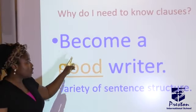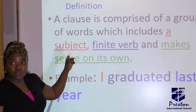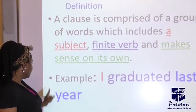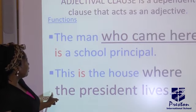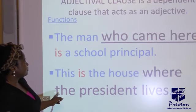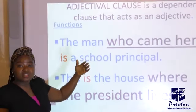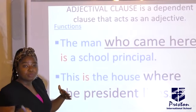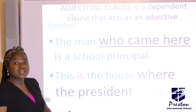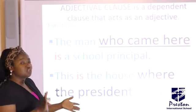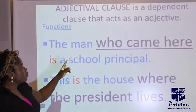Like I told you last time, you need to learn how to use your clauses to become a better writer. For this class we are going to look at the adjectival clause. An adjectival clause is a dependent clause — a type of subordinate clause — that acts as an adjective. It does everything an adjective does: it qualifies a noun or a pronoun in a sentence.